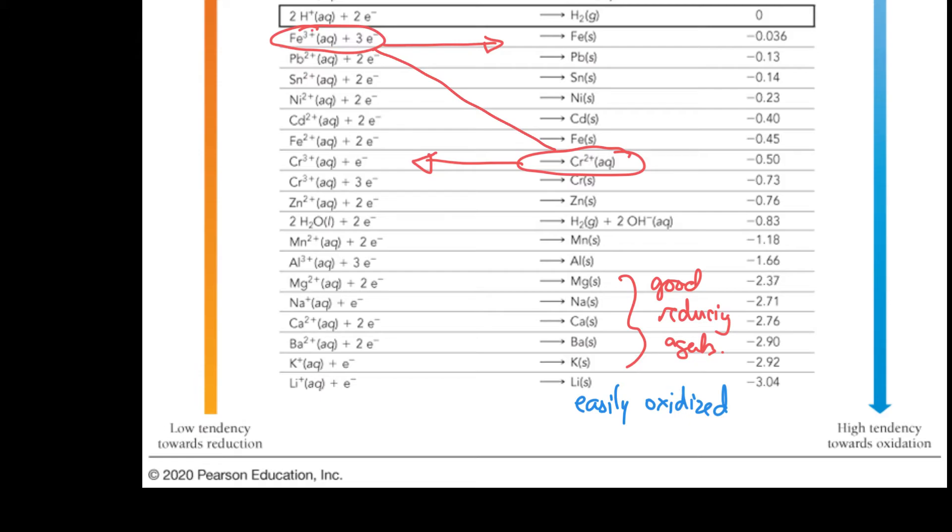So how would we write that in a cell term? So the forward reaction is reduction, that's gain of electrons, red cat, that occurs at the cathode. That's the thing we put at the right-hand side of a cell. And this backwards reaction here is oxidation because chromium is losing electrons.